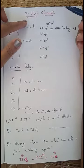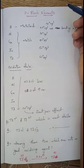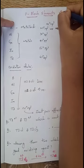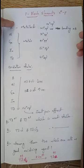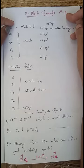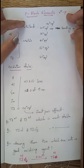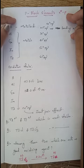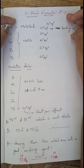First you want to know what P block elements are. P block elements are the elements which contain the last electron in the P orbital. If the last electron is present in the P orbital, then those elements are said to be P block elements. Under P block elements, totally six groups are present because the P orbital has a capacity to fill totally six electrons.